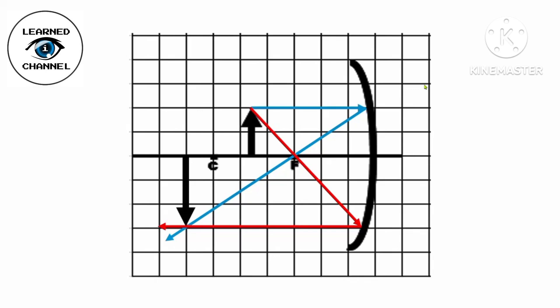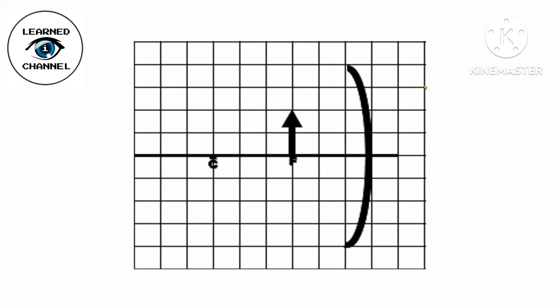How about if the object is placed at F? As you can see, there is no intersection between the two rays, but it doesn't mean there is no image. The characteristic will be the image is at infinite distance. It is inverted, enlarged, and real.